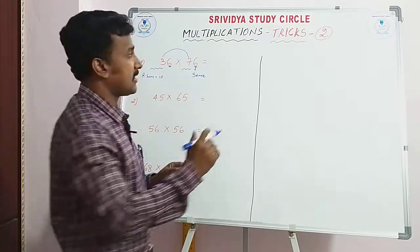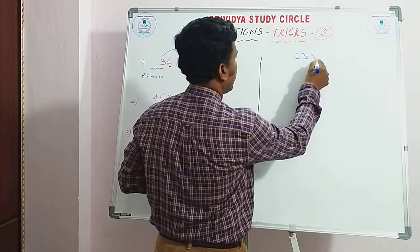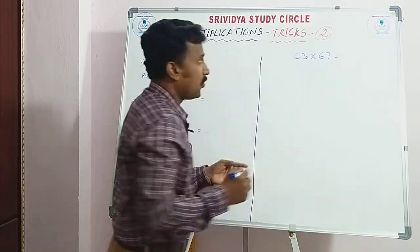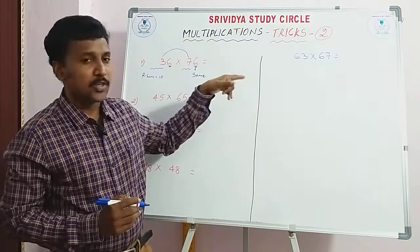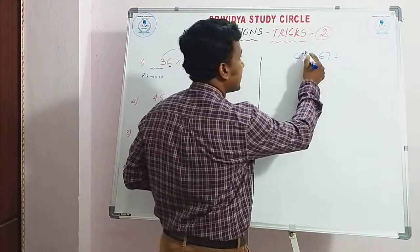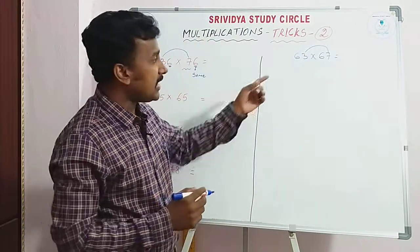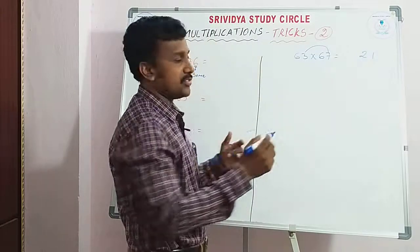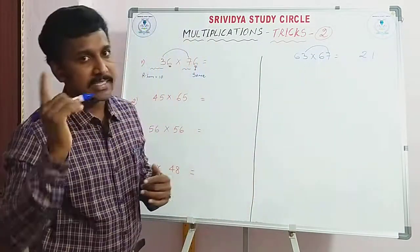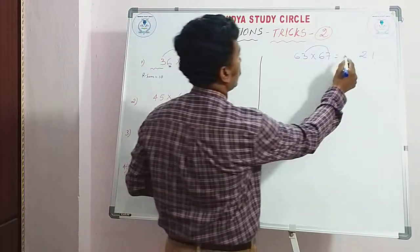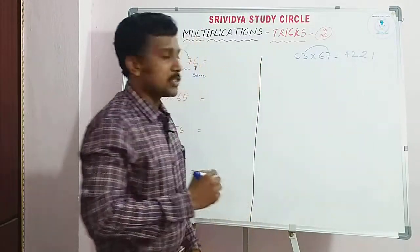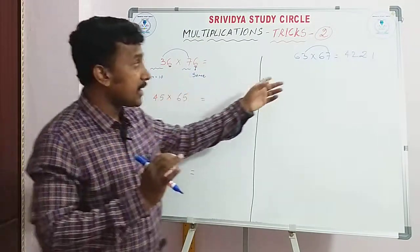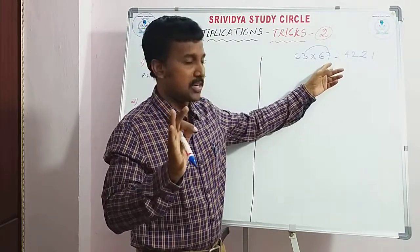Once recall the previous trick. For example, 63 into 67. We're done in Trick 1. Units digits sum, 10th place — 3 plus 7. And remaining digits, 66. How did you do this one? 3, 7, 21 — direct multiplication. 6 after 7: 6, 7, 42. 4, 221. That's what we do. Trick 1, 2 digits, 3 digits — we have observed. Units digits sum 10, we have observed. Remaining digits same. But a little bit different here. Units digits same. There, remaining digits same. 10th digits sum 10. That is remaining digits 10th.